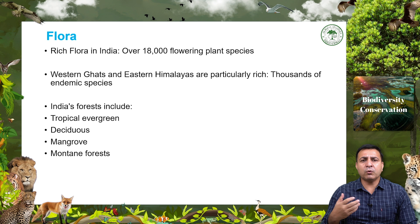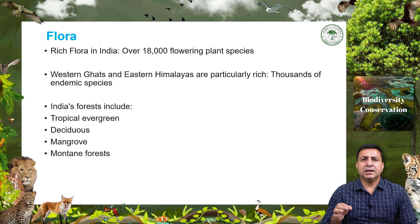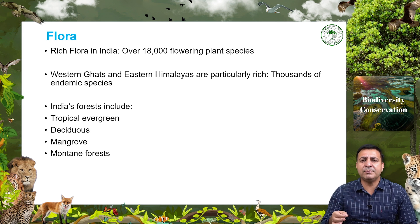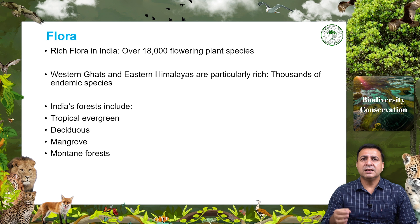In terms of flora, India is home to over 18,000 flowering plant species, making it one of the world's most botanically diverse regions. The Western Ghats and the Eastern Himalayas are particularly rich in plant diversity with thousands of endemic species. India's forests include tropical evergreen, deciduous, mangroves, and mountain forests, each supporting a unique assemblage of plant life.